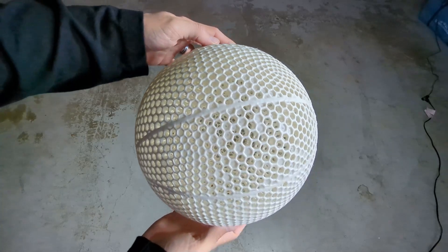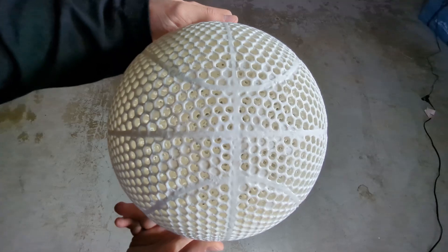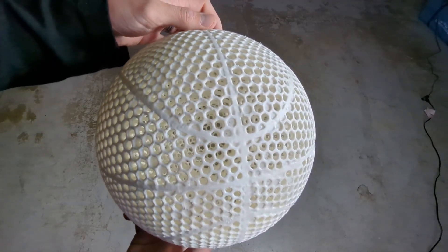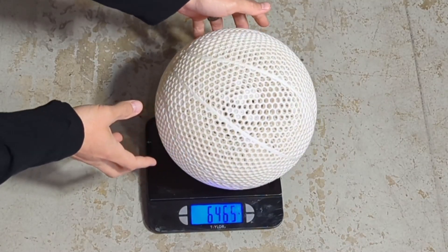In the Uncle Jesse video, he did his in black and it was obvious to see that it was coated in 3D Gloop, and in this one with the white, it actually seems to hide it pretty good, but at this point there's nothing left to do but weigh it and give it a bounce test.